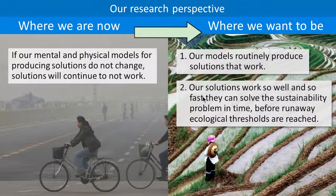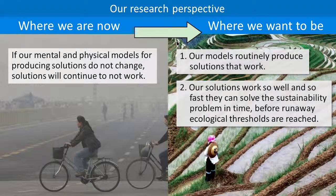Now notice this green arrow. That represents the strategic path we need to take from where we are now to where we want to be — it's a solution strategy. From our perspective, our problem here is not to solve the sustainability problem; it's to solve the problem of the inability of present models to routinely produce solutions that work. That's a different problem, and it's where we've focused our research like a laser beam for the last 12 years, since 2001.